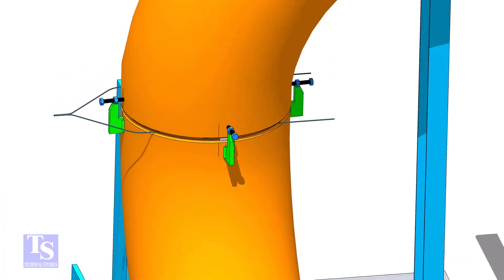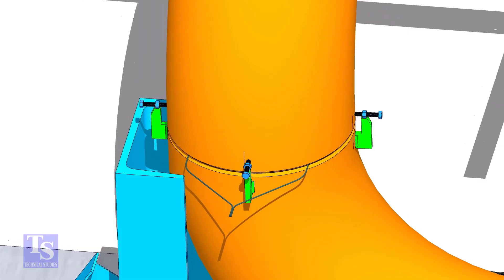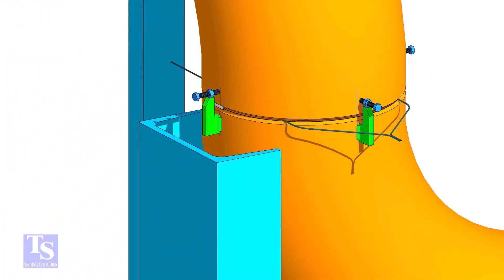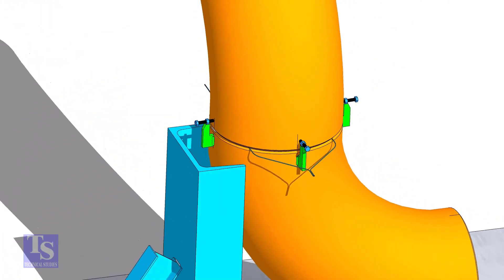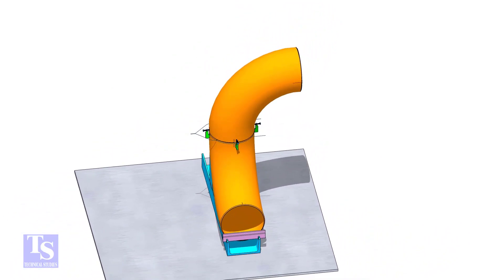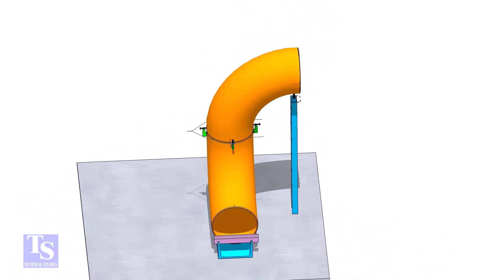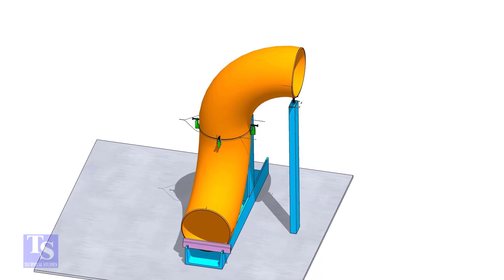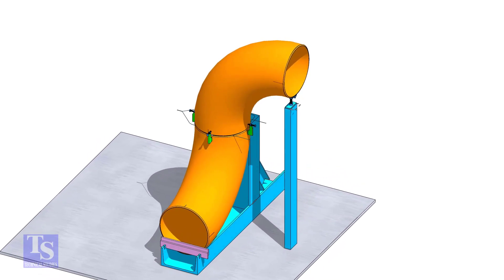Tack weld on the near and the far sides of the joint as shown. Check the verticality of the elbow face.